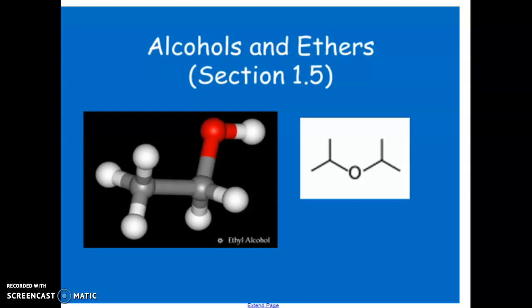For our next two functional groups, we're looking at alcohols and ethers. In general, an alcohol is any carbon-based molecule that has an OH group on it. You can see it here - carbons and hydrogens, the oxygen is in red, and hydrogen is in white.